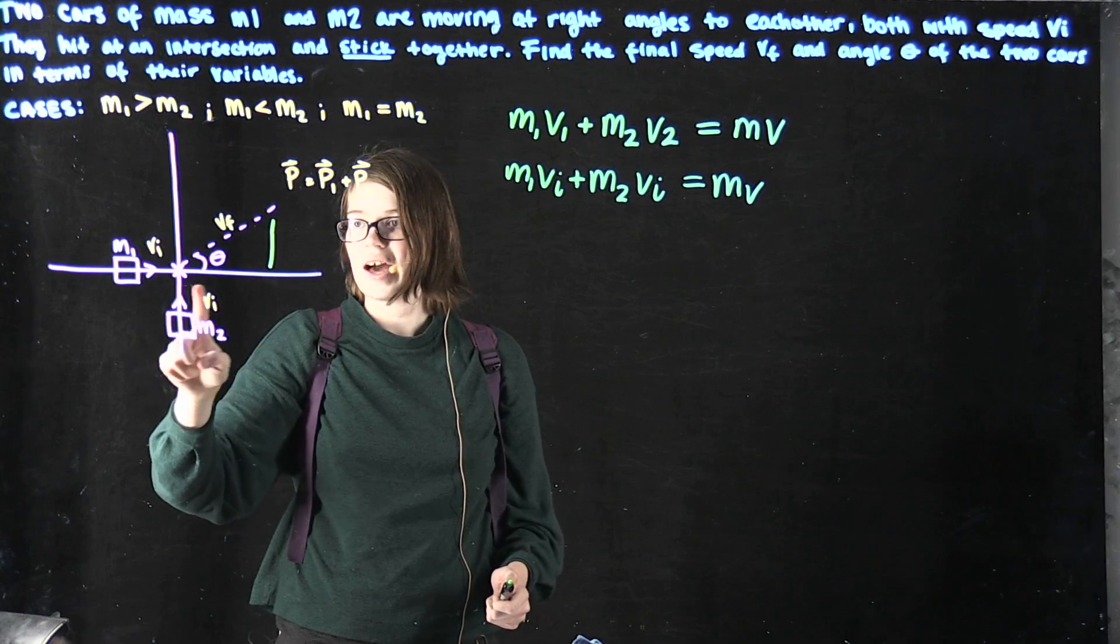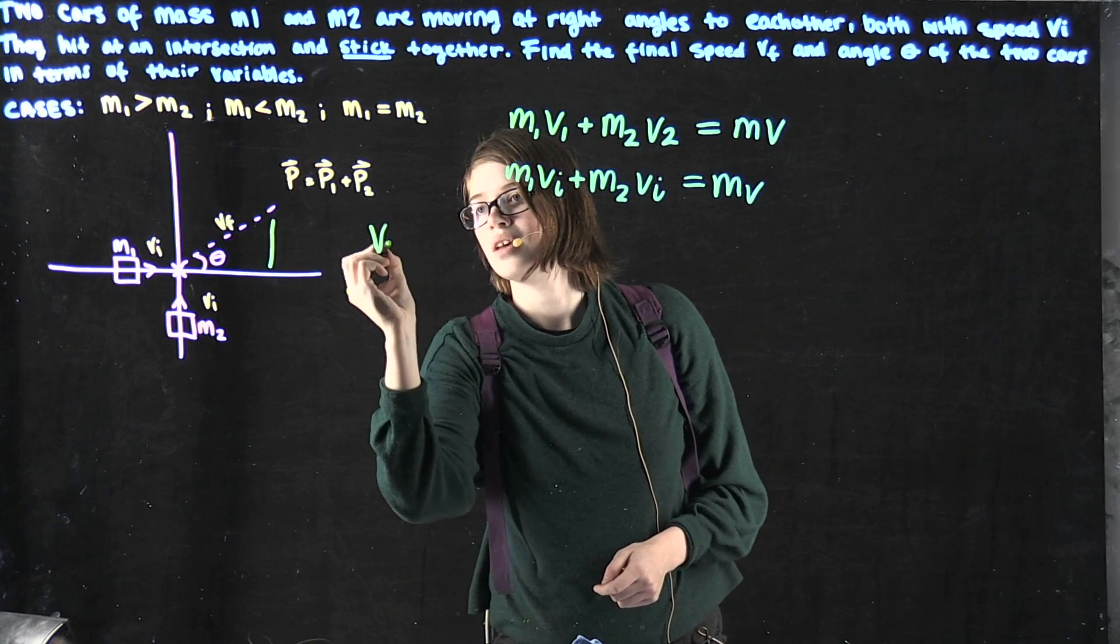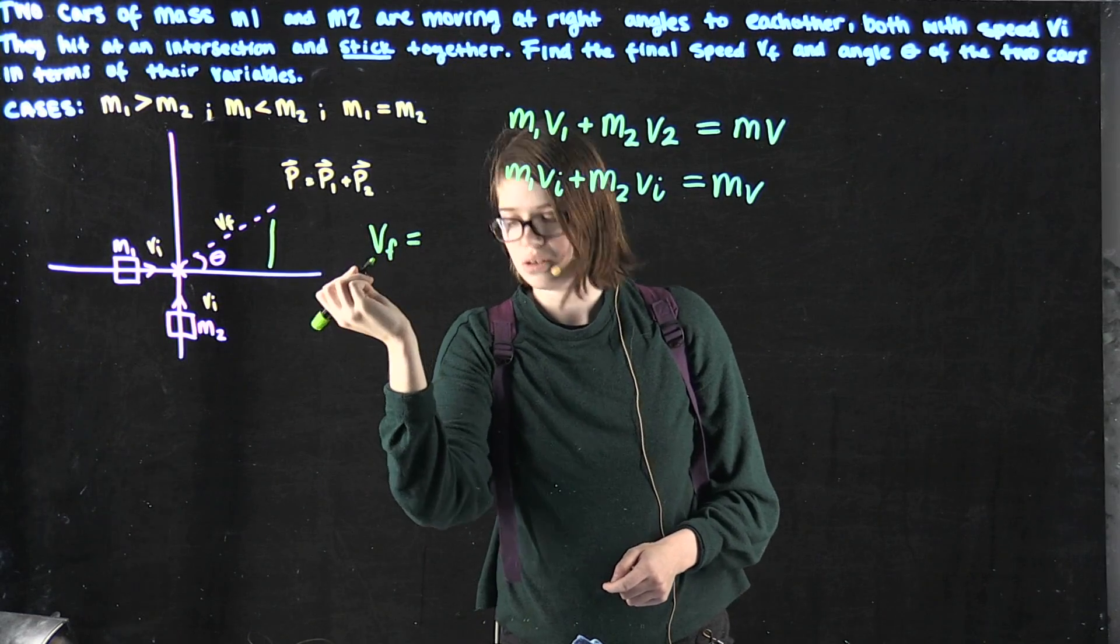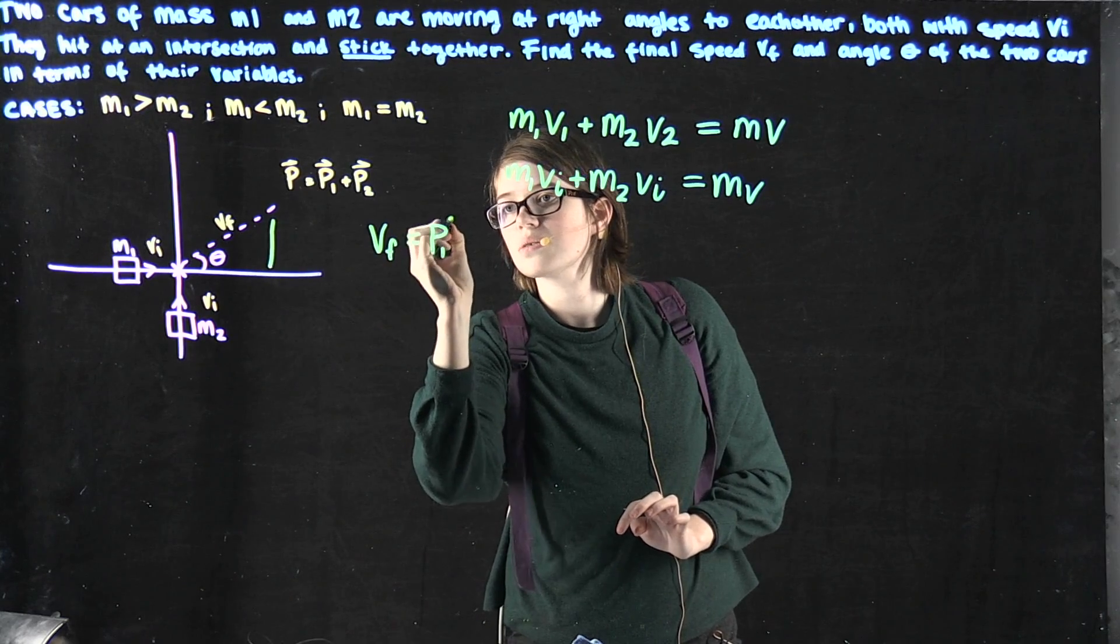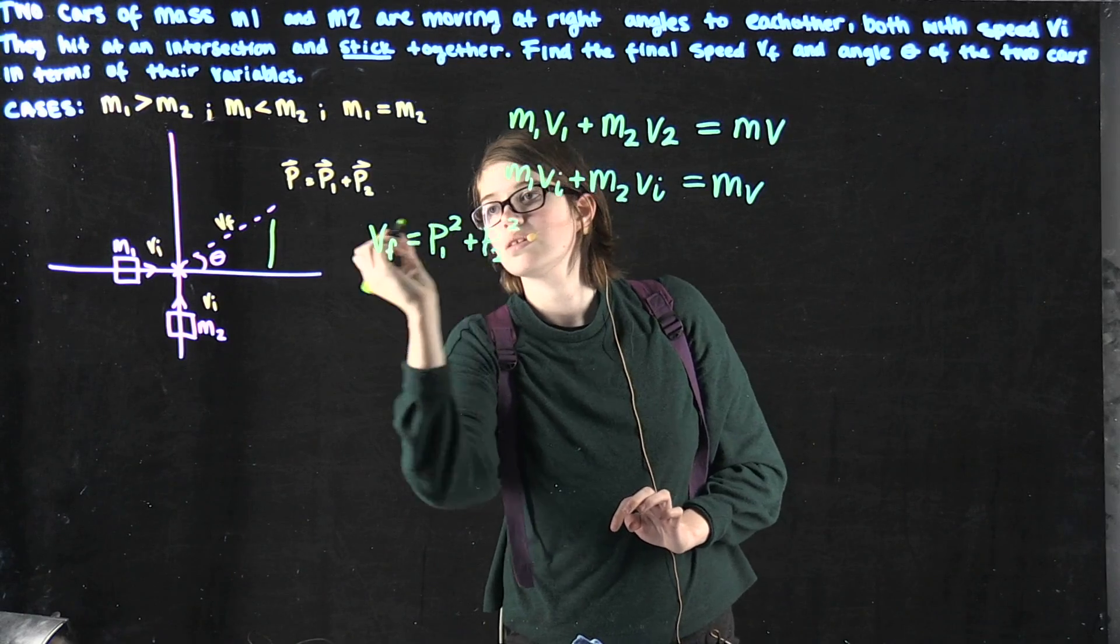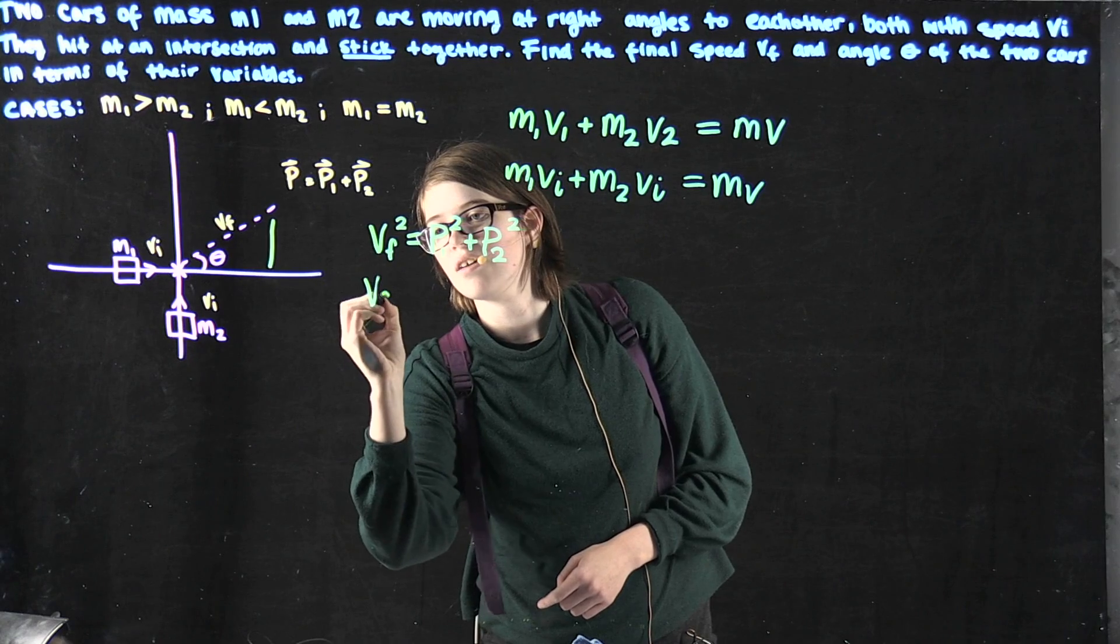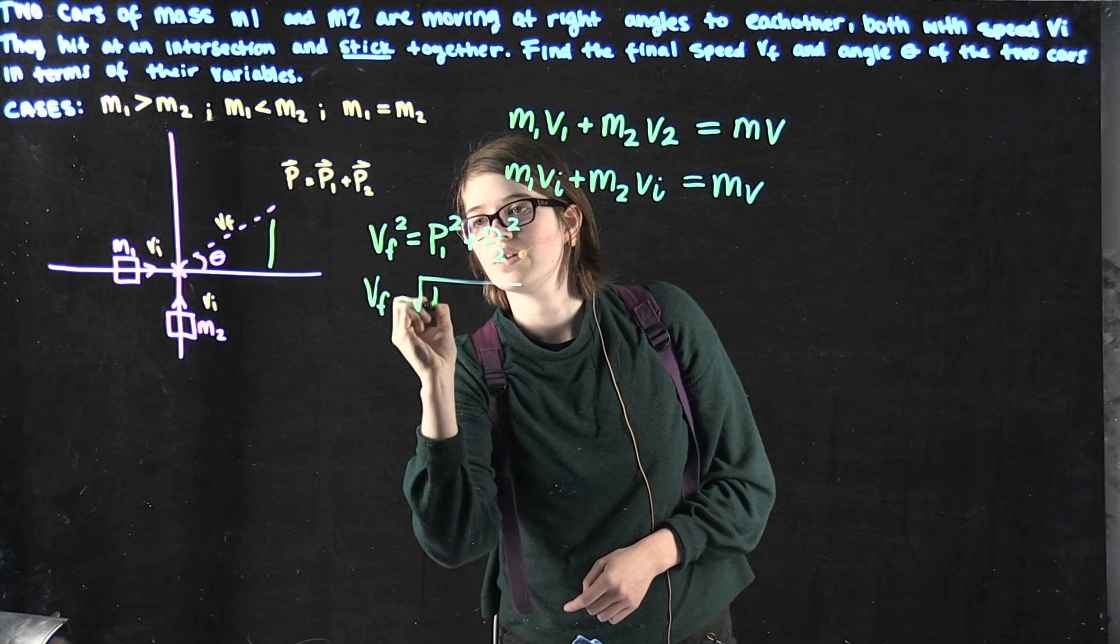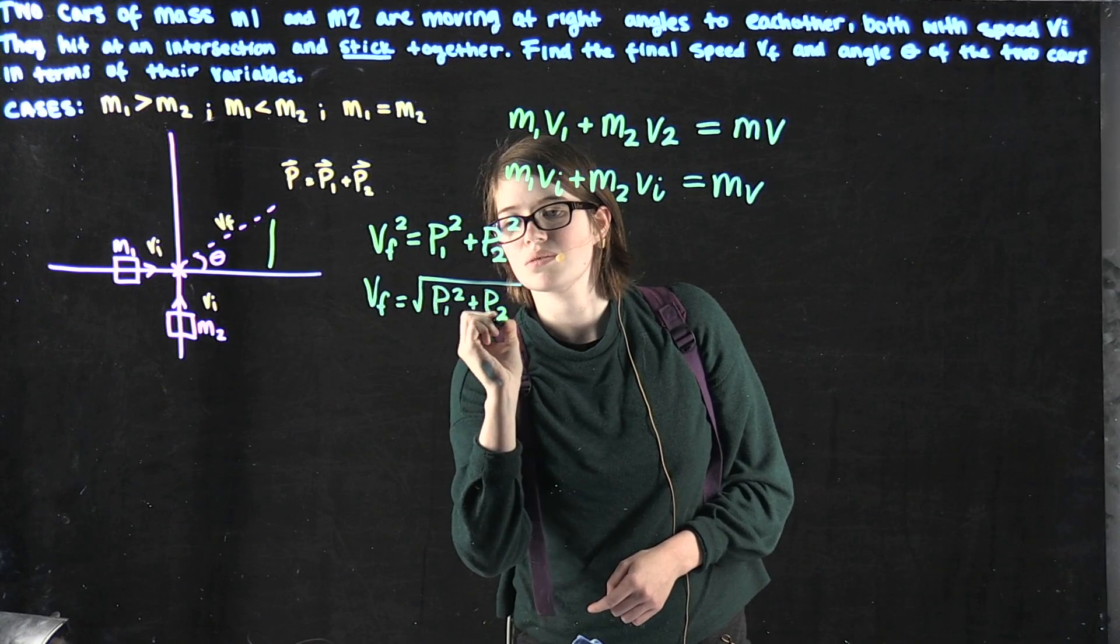We can do the Pythagorean theorem, where we have p1 squared plus p2 squared equals vf squared, which means we can define vf as equal to the square root of p1 squared plus p2 squared.